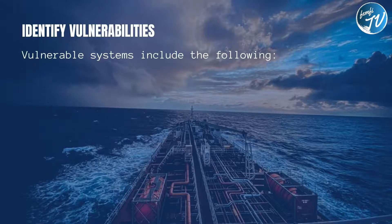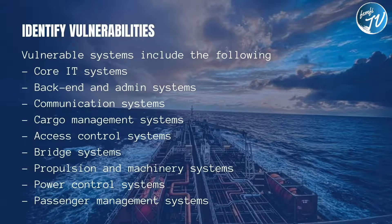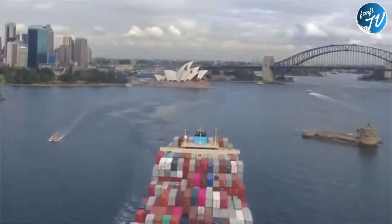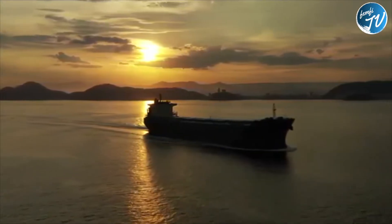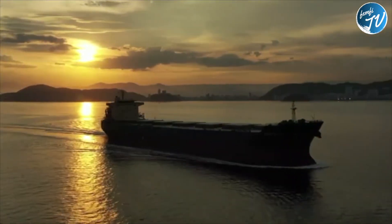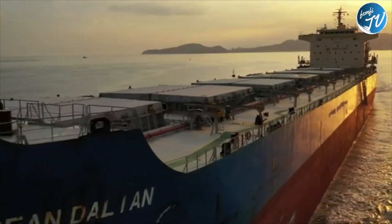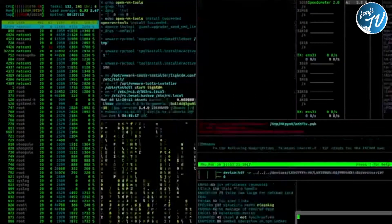Vulnerable systems include: core IT systems, back-end and administrative systems, communication systems, cargo management systems, access control systems, bridge systems, propulsion and machinery systems, power control systems, and passenger servicing and passenger management systems. In this step, it is also important not to overlook the human element — poor staff training and lack of procedural awareness leaves individuals open to cyber threats like phishing and social engineering.